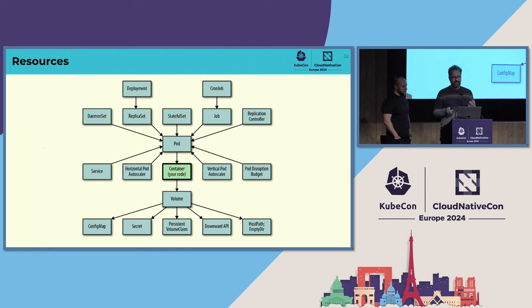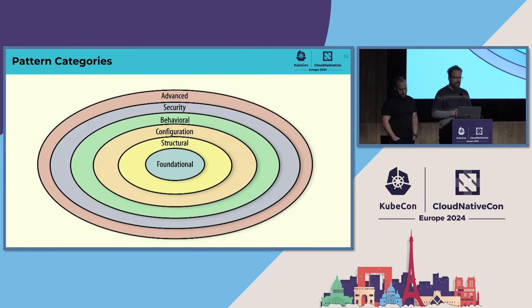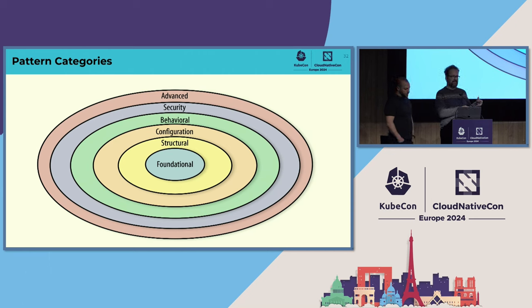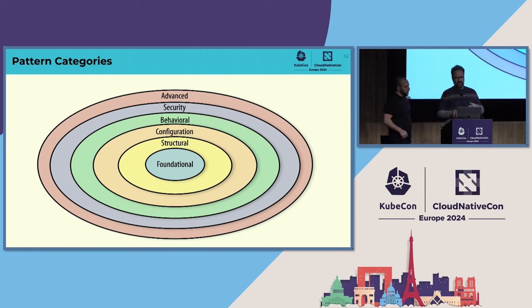Now let's start with our patterns. We've made a categorization of those patterns, grouping ones that belong together. Kubernetes itself is kind of a pattern machine — it implements patterns that evolved when running workloads on clusters. If some patterns look like part of the Kubernetes documentation, that's not by accident, it's intended. We have six categories and will cover one example from each.